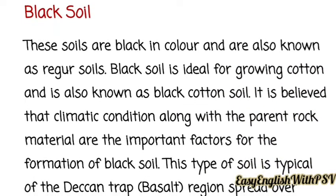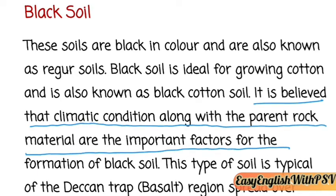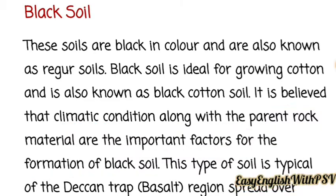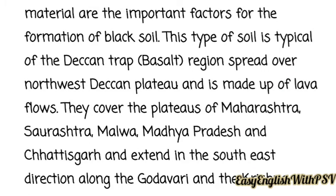The next soil type is black soil, also known as Regur soil or black cotton soil. These soils are black in color and are ideal for growing cotton. It is believed that climatic conditions along with the parent rock material are the important factors for the formation of black soil. This type of soil is typical of the Deccan Trap Basalt. The region is spread over the North-West Deccan Plateau and is made up of lava flows.